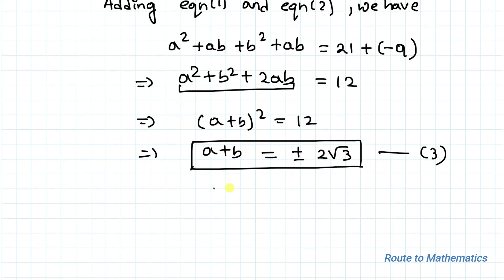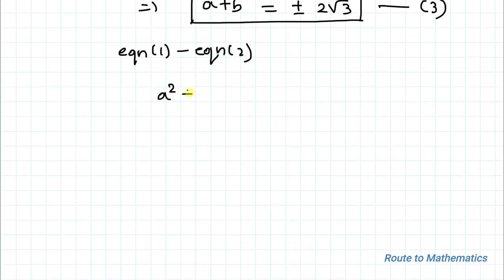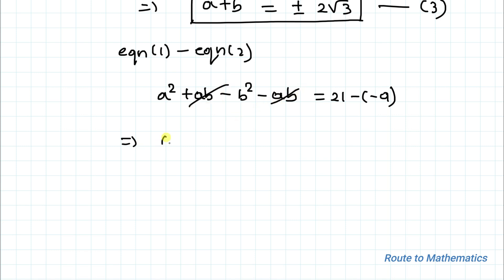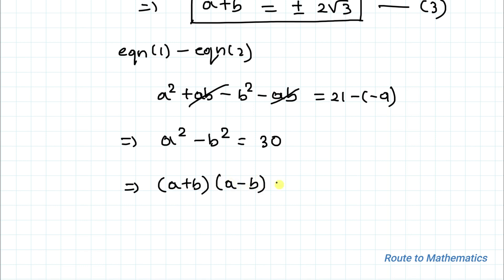Now in the next step, I will subtract equation 2 from equation 1. Subtracting we have: a² + ab - b² - ab = 21 - (-9). Here +ab and -ab cancel out, so we get a² - b² = 30. Applying the algebraic identity, a² - b² = (a + b)(a - b) = 30.